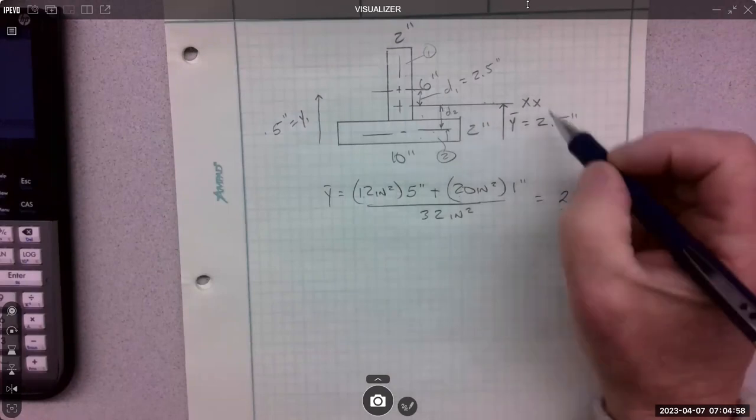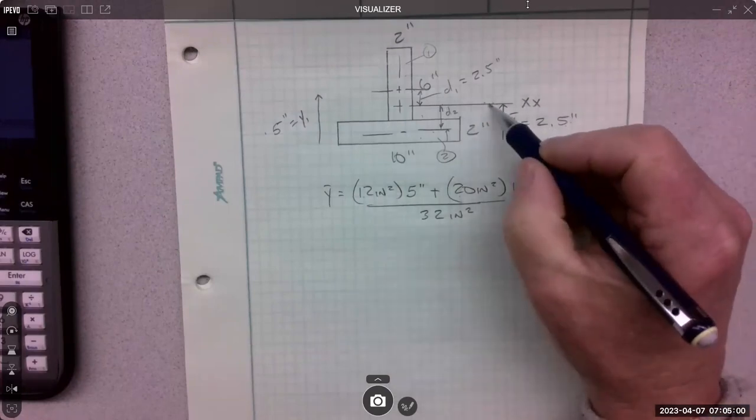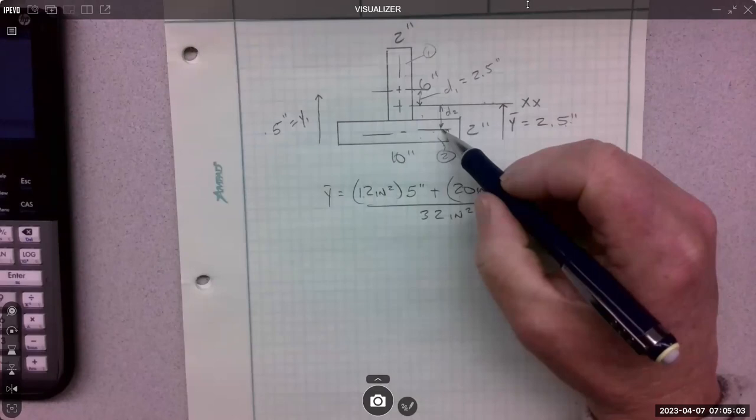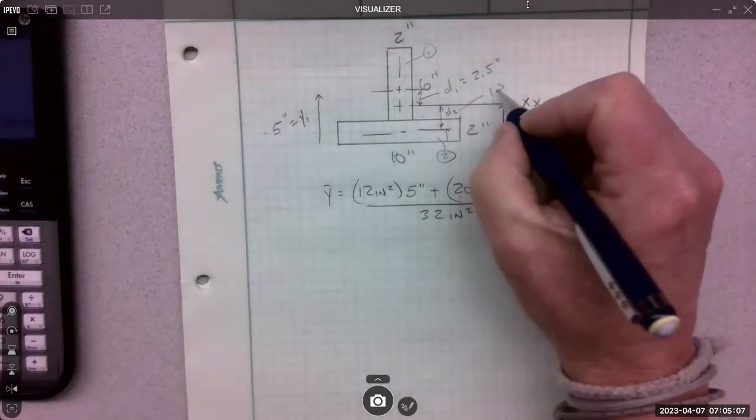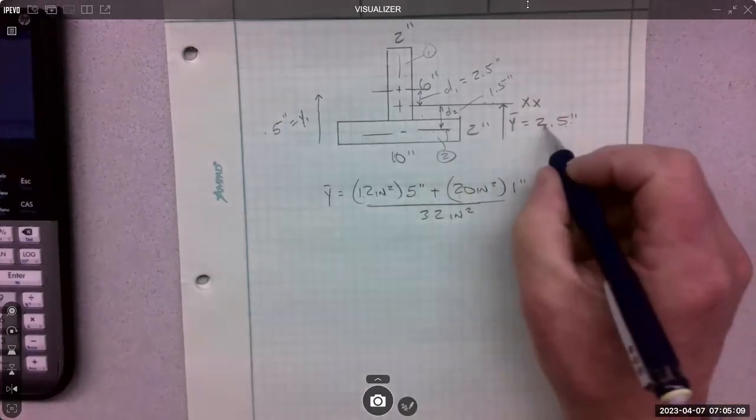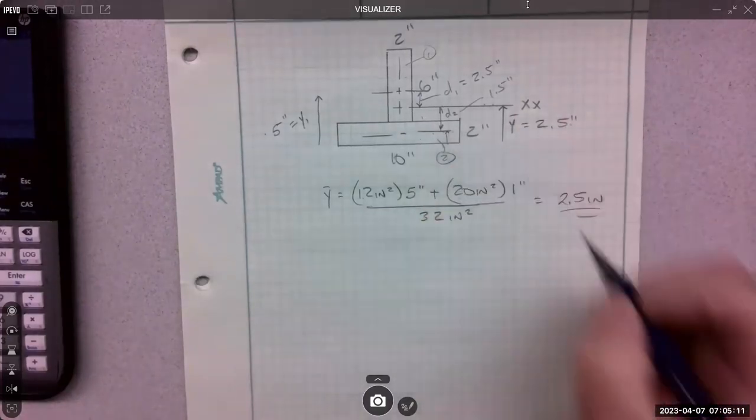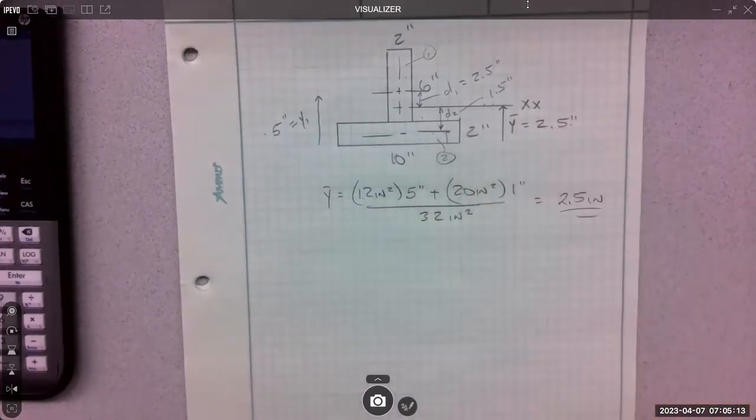D2 would be two and a half up to here, take away this one inch. So it's going to be one and a half. Two and a half minus the one inch for D2.